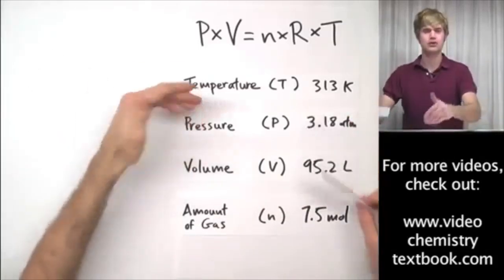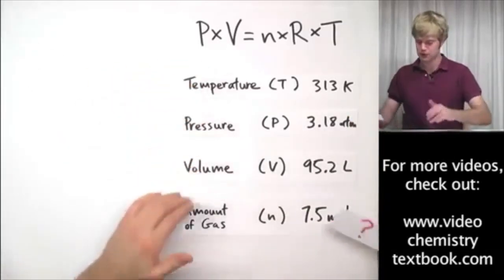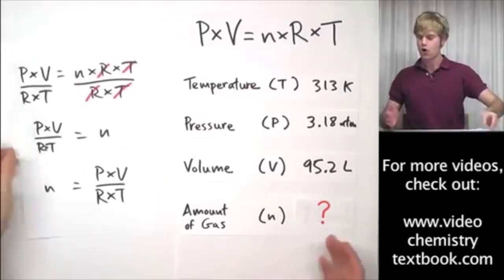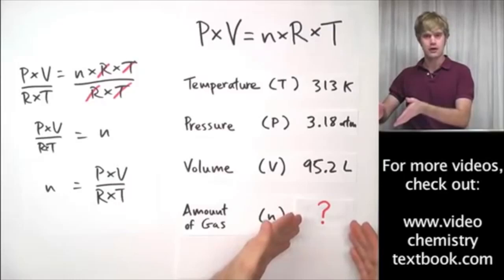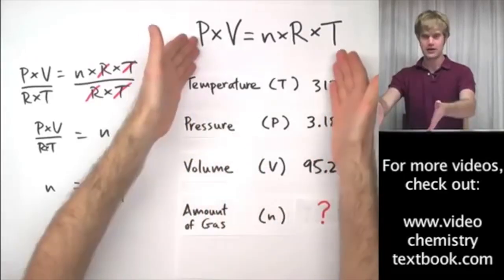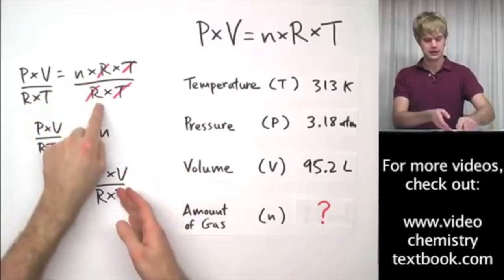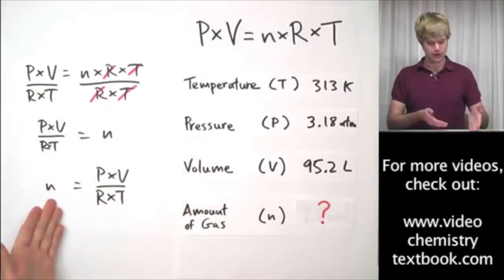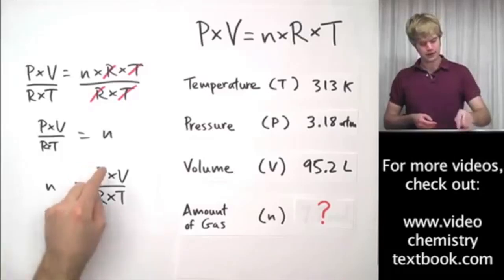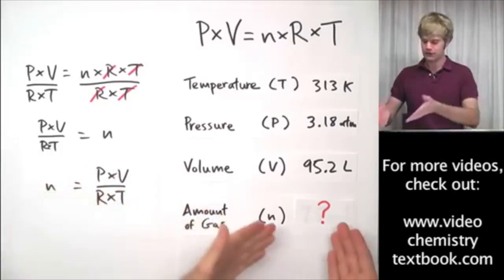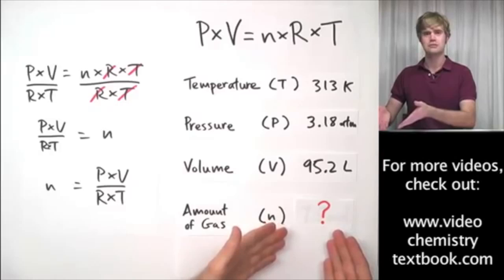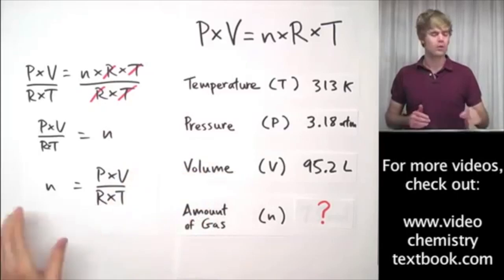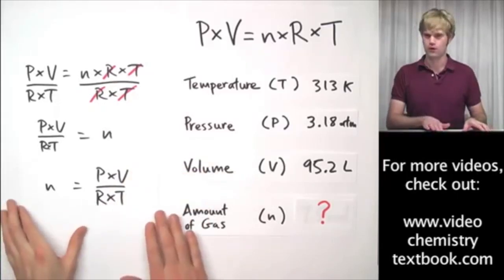Or let's say that we knew what the pressure was of a particular gas sample, we knew what the temperature was and the volume, but we didn't know what the amount of gas was. We didn't know how much we had. We could figure out that fourth characteristic by rearranging the ideal gas law for N, canceling out R and T on one side, rearranging it to solve for N, and then we could plug in the pressure, the volume, and the temperature, and we could figure out the amount of gas. So in other words, if we know three of these characteristics, we can always figure out what the fourth is.